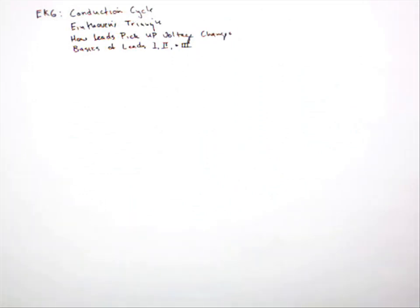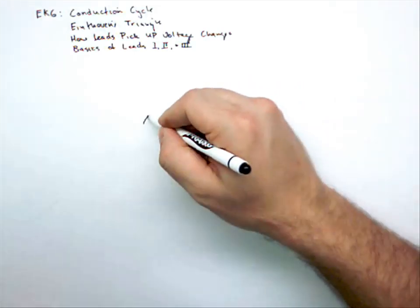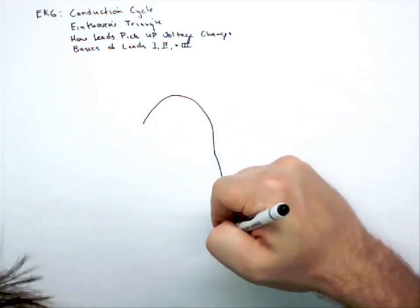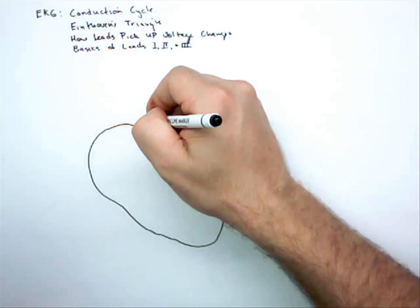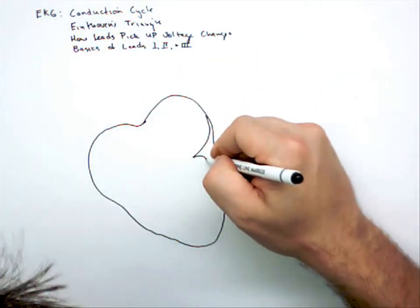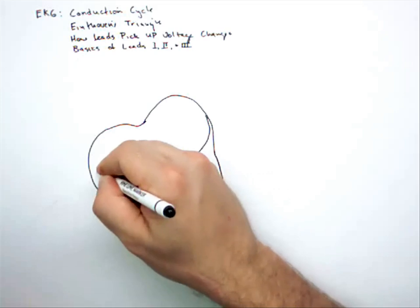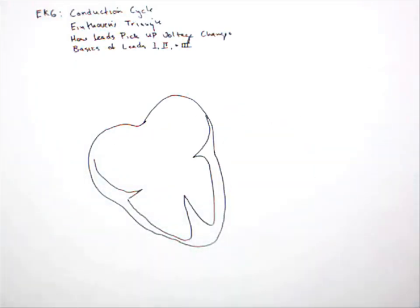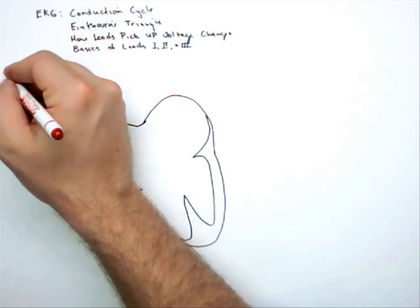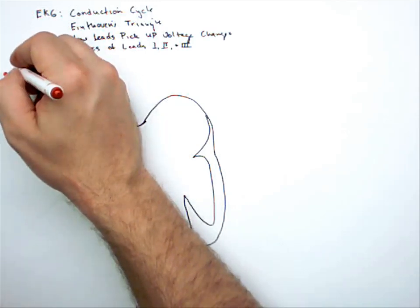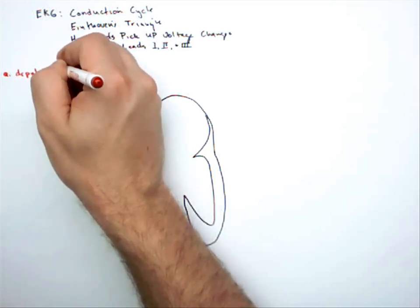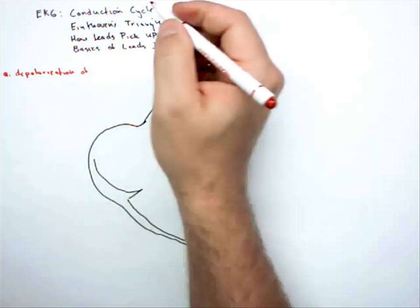The first thing we need to do is go through the conduction cycle. Depending on how you've learned this before, the steps might be a little bit different. But the reason they're going to be different now is because you need all these steps included in order to understand every deflection in the EKG. For example, most people don't include septal depolarization — it's just kind of left out in generic descriptions. But we're going to need septal depolarization because it's necessary to explain the Q wave.